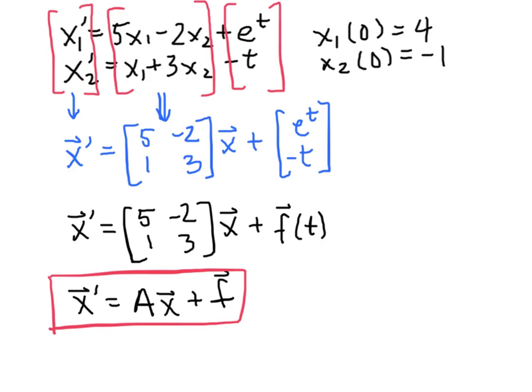Now, if we take a look up here, let's go up to our initial conditions, which I'm boxing in blue here. And we can see that we could create a vector whose components were x1(0) and x2(0).